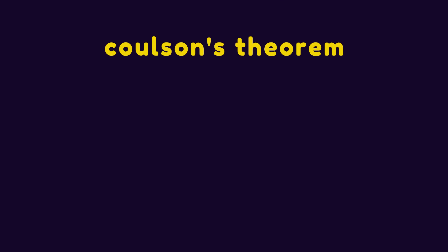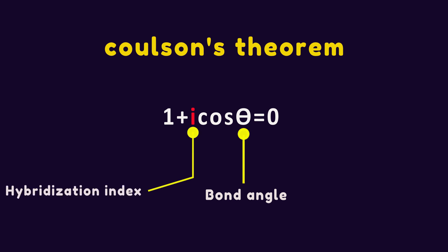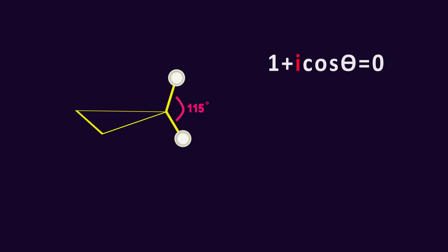Based on Coulson's theorem, bond angle can be related to the hybridization by a simple equation in which i is defined as hybridization index. When we define the hybridization as SPi, the CHC bond angle in cyclopropane is 115 degrees. According to the equation, the hybridization index corresponding to this bond angle is 2.46.